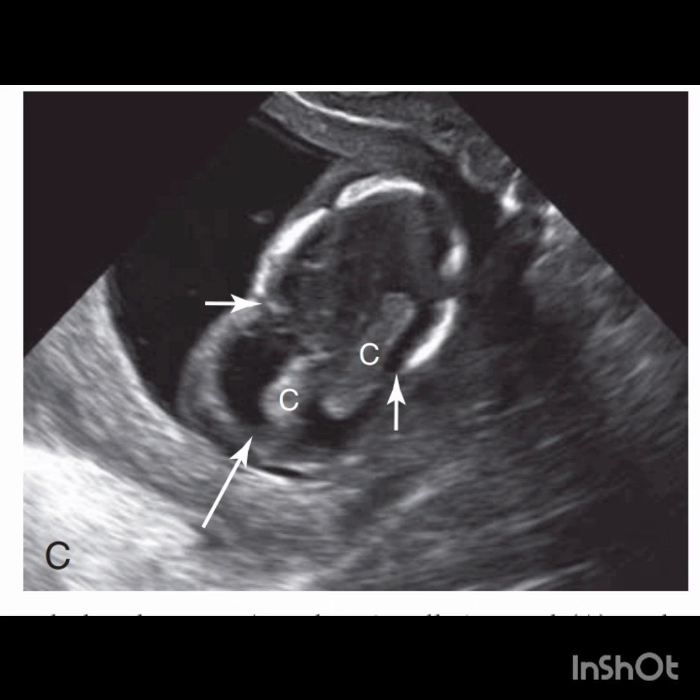This image shows a large encephalocele indicated by the long arrow. The encephalocele also contains two choroid plexuses indicated by the letter C. The calvarial defect is indicated by the two short arrows.